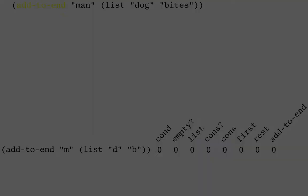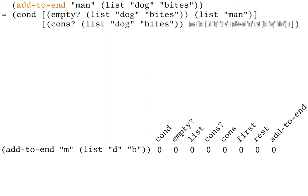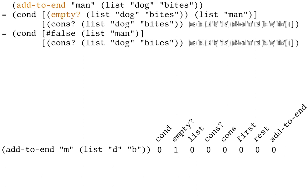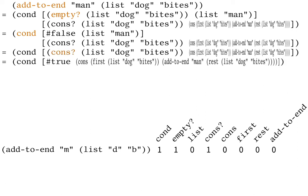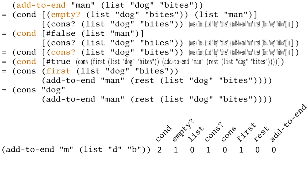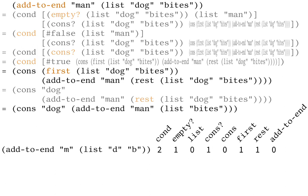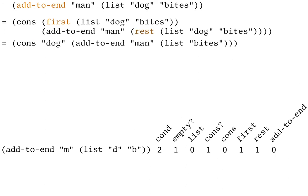We can also make a table to summarize how much time has been spent on each operation. First, the computer looks up the definition of the addToEnd function. Then, the computer checks if the input list is empty — it's not. Then, the computer checks if the input list is a cons — it is. Then, the computer selects the first of the input list. Then, the computer selects the rest of the input list. Now, the computer is ready to make the recursive call to addToEnd.